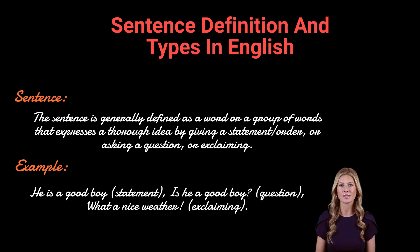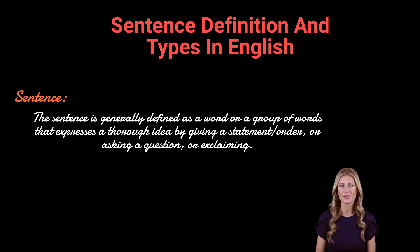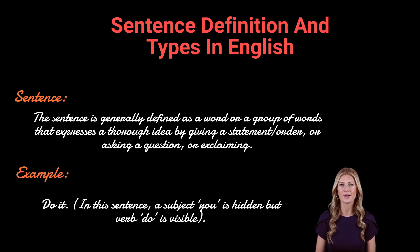Ideally, a sentence requires at least one subject and one verb. Sometimes the subject of a sentence can be hidden, but the verb must be visible and present in the sentence. A verb is called the heart of a sentence. For example, 'Do it.' In this sentence, the subject 'you' is hidden but the verb 'do' is visible.